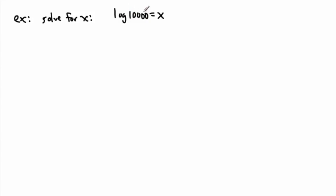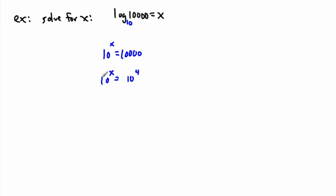Let's change the example and add an extra zero. So if we have log of 10,000 equals x, how do we actually solve that? I think it's important to make it an exponential equation — it's a lot easier to look at. Because the base is not written, we know it's log base 10. So that means 10 to the power of x equals 10,000. I need to rewrite 10,000 as a power of 10. 10,000 is the same as 10 to the power of 4 — there are 4 zeros. So because 10 to the x equals 10 to the 4, same base, x equals 4.